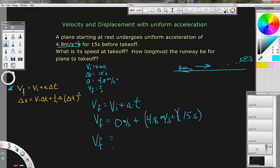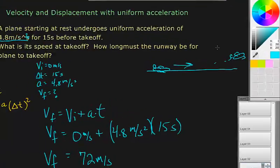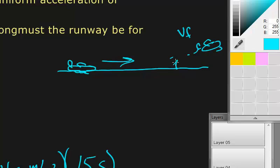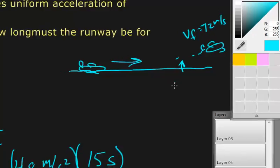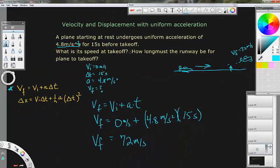So the seconds and the seconds squareds will cancel, and you will wind up with a final velocity of 72 meters per second. So the final velocity as this plane lifted off the ground was 72 meters per second. That's the answer to its speed at takeoff.